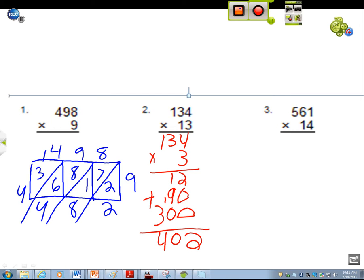And then you do 134 times 10 equals 1,340.